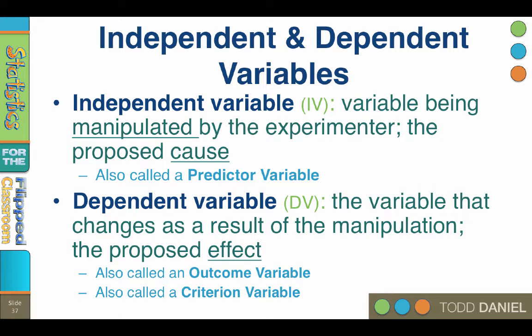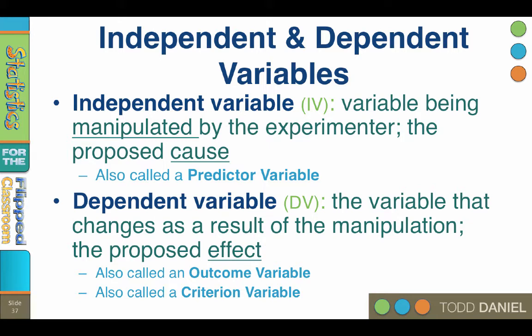Outside of science, we tend to think about life in terms of dependent variables or outcomes, and then we try to propose independent variables that matter. For example, do you want to be successful in life? How do you define success? What would have to happen in your life for you to feel that you have been a success? Those are outcomes or dependent variables. What would you have to do to become successful? Those are your inputs or independent variables.